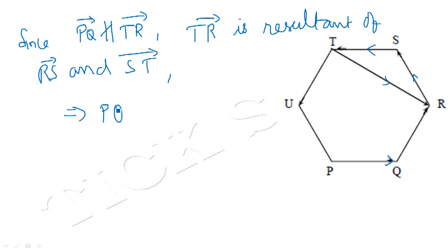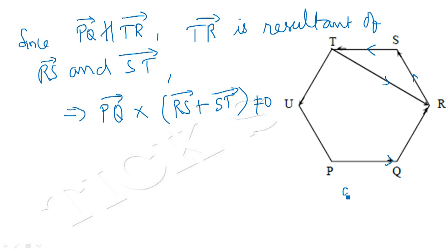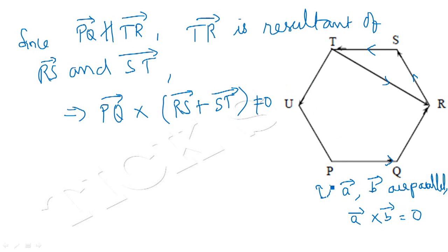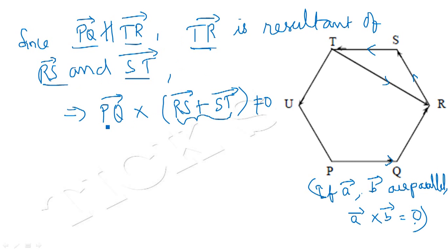Since PQ vector is not parallel to TR vector, and TR is the resultant of RS and ST, we can say that PQ vector cross (RS vector + ST vector) is not equal to 0. We know that two vectors A and B must be parallel for their cross product to equal zero. Since PQ and TR are not parallel, and TR equals RS + ST, we get PQ cross (RS + ST) ≠ 0.